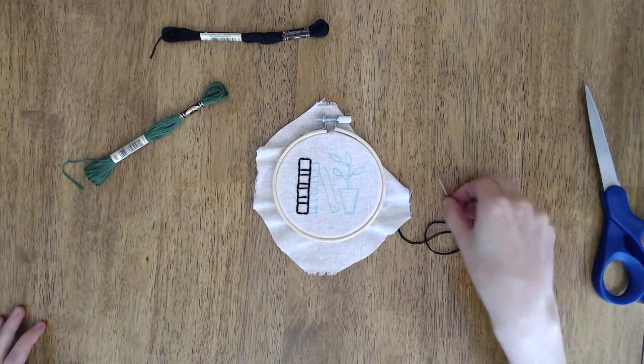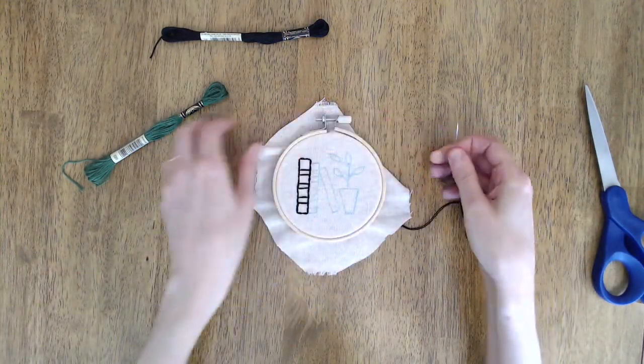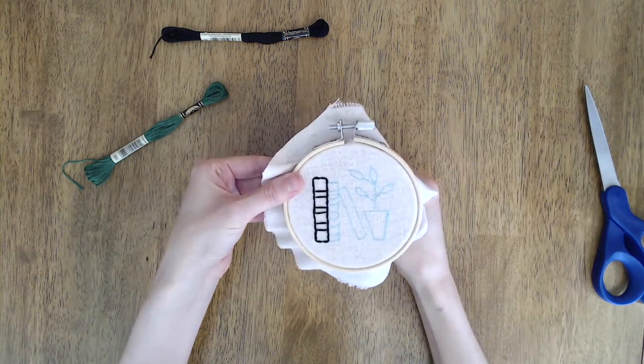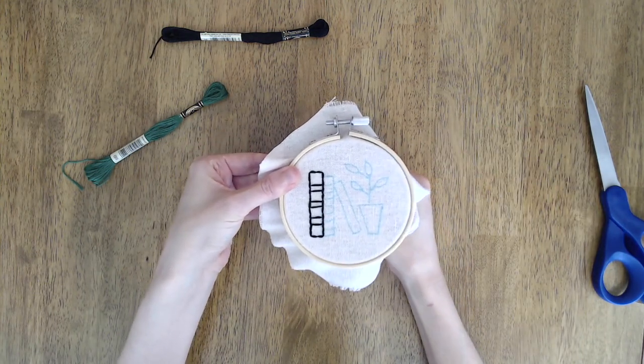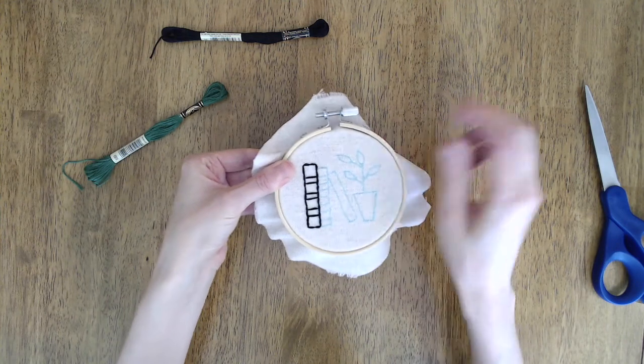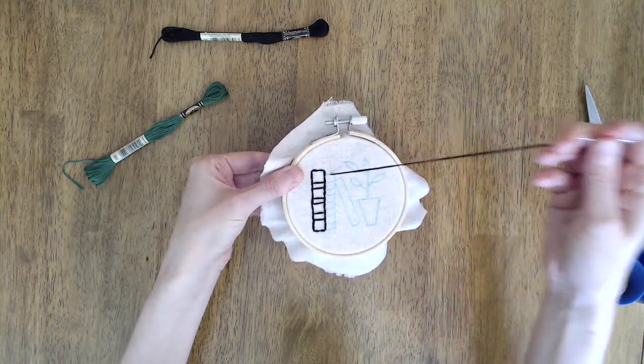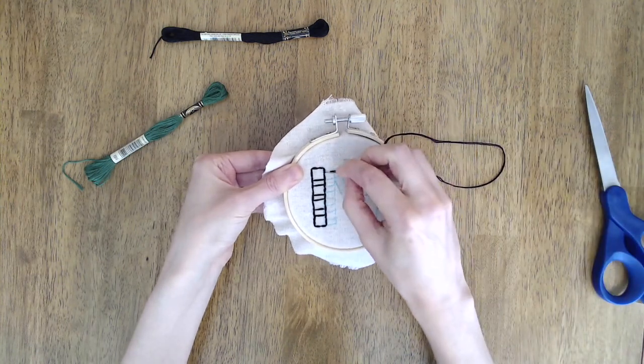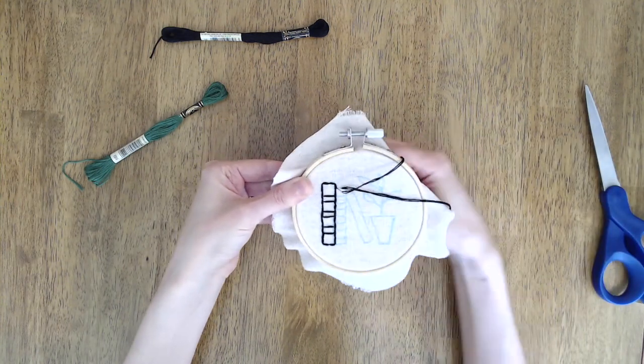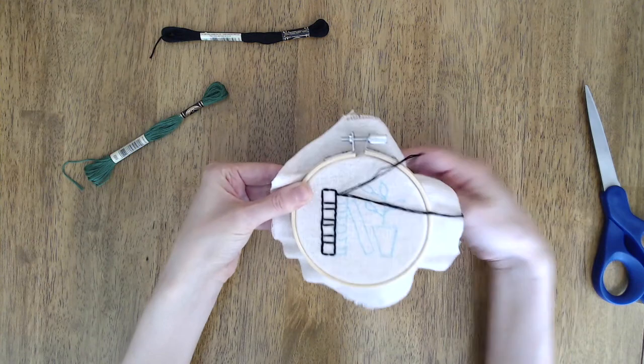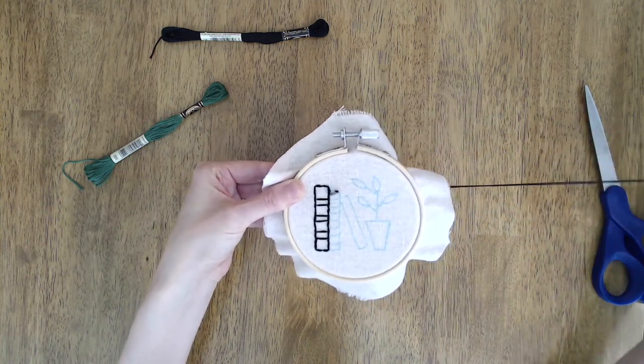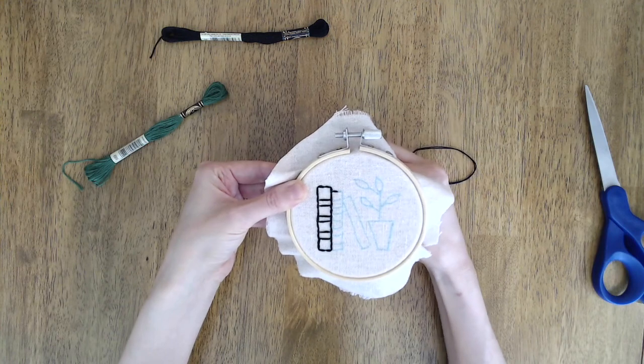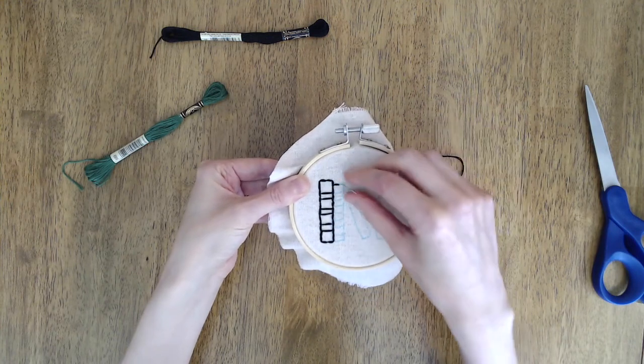We're going to fill in most of the pattern using the backstitch. This is a fundamental embroidery stitch that's great for outlines. You can see here that I've already done part of the pattern but I've used the same stitch that I'm going to show you. So to do the backstitch you'll poke the needle through from the underside of the fabric at a point ahead of where the line starts and then go back through the fabric at the start of the line.